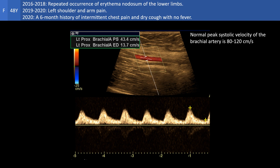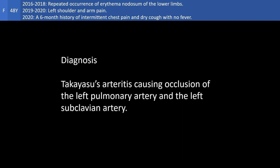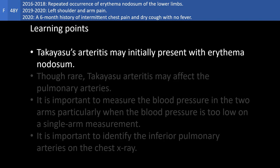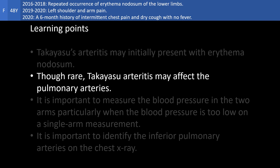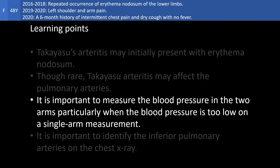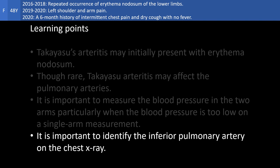This is analogous to the very important and simple clinical test in Takayasu's arteritis, which is measuring the blood pressure in both arms and noticing the difference on the diseased side. The diagnosis in this case is Takayasu's arteritis causing occlusion of the left pulmonary artery and the left subclavian artery. The learning points are: Takayasu's arteritis may initially present with erythema nodosum; though rare, it may affect the pulmonary artery; it is important to measure blood pressure in both arms, particularly when it is too low on a single arm measurement; and the most important radiological learning point is to identify the inferior pulmonary artery on the chest X-ray, as it may be the clue to the diagnosis in cases such as this.